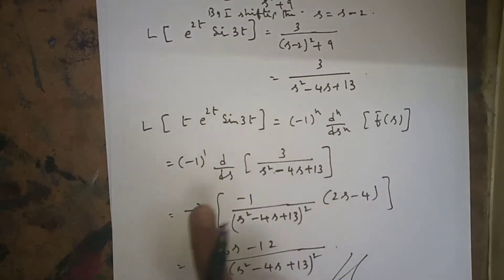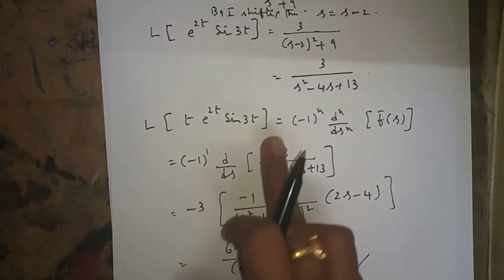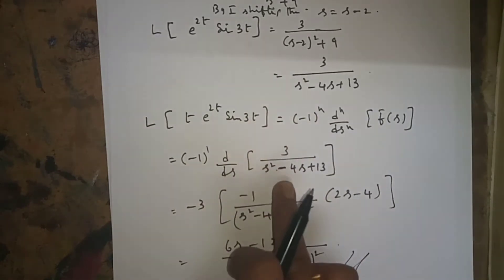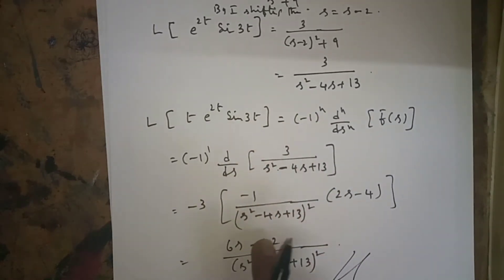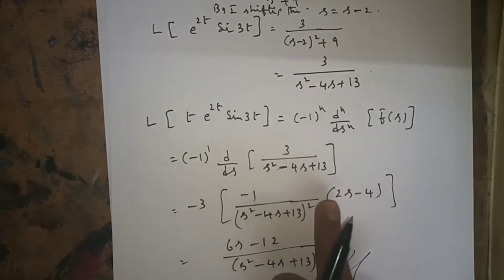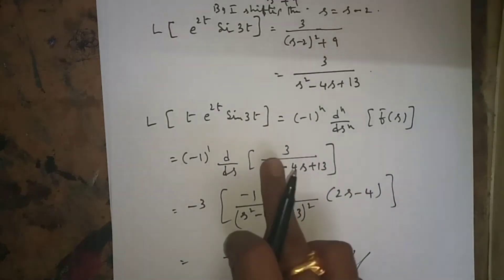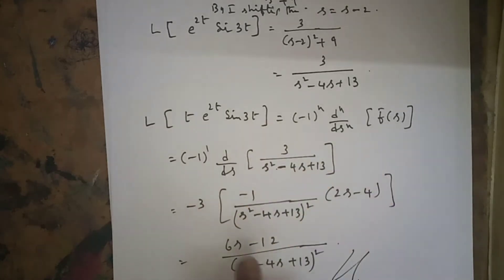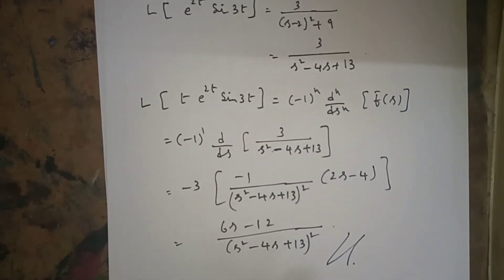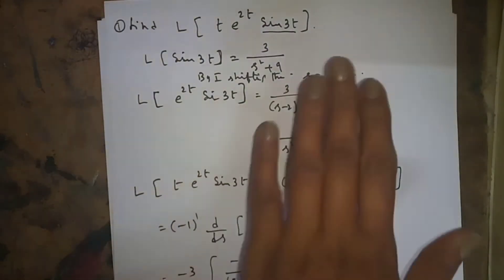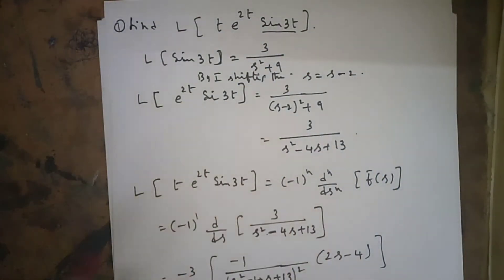We wrote -3 outside. The expression is in the form 1/x, whose differentiation is -1/x². The inside part differentiated: d/ds(s² - 4s + 13) = 2s - 4. Multiplying gives the final answer. The procedure order is: first find L{f(t)}, then apply First Shifting Theorem, then multiply by t^n.